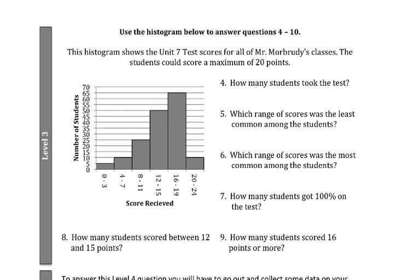Level 3 is all about being able to read a histogram and understand what it's saying. A big part of that is being able to understand the axes. So if you notice here on the side, we're seeing the number of students and the scores received. What happened here is this is Mr. Morbroody's classes all put together for their Unit 7 test scores.